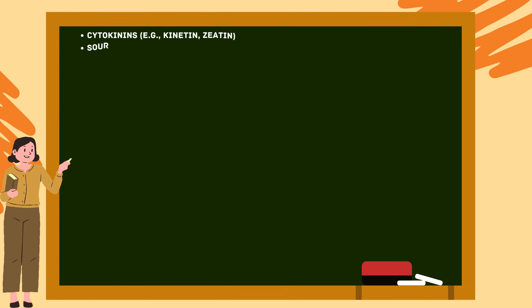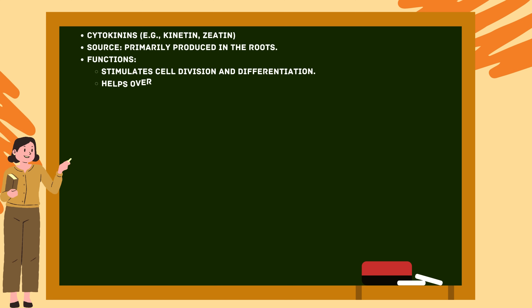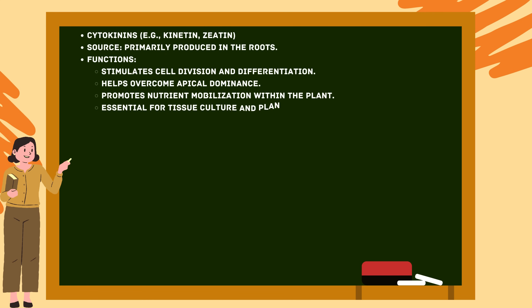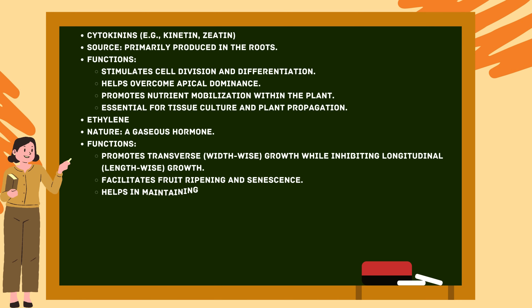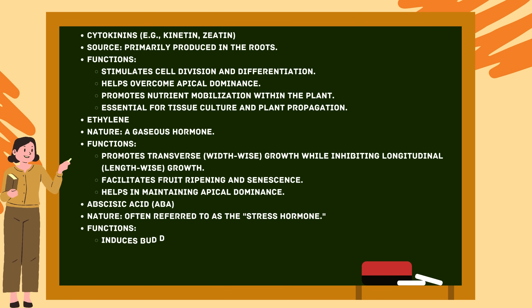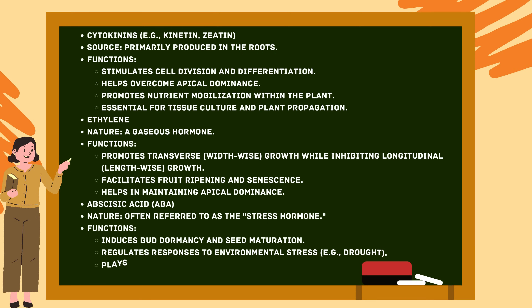Cytokinins are primarily produced in the roots. Their functions include stimulating cell division and differentiation, helping overcome apical dominance, promoting nutrient mobilization within the plant, and being essential for tissue culture and plant propagation. Ethylene is a gaseous hormone that promotes transverse (widthwise) growth while inhibiting longitudinal (lengthwise) growth and facilitates fruit ripening and senescence.